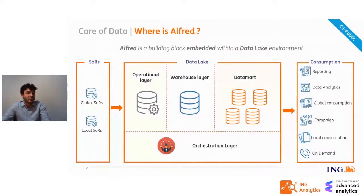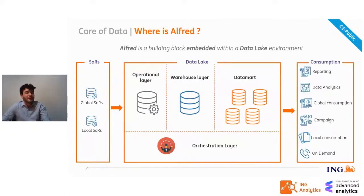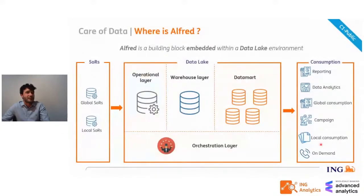Here we can see the architecture of the environment. On the left side there are the source systems, local and global. In the middle there is the entire Data Lake environment with its different layers, and Alfred's repository lives in this environment. On the right hand, we can see all the outputs generated from the data lake: data reports, analysis, local and global consumption, and everything else. In this way, Alfred manages all processes running on the data lake — the loading of data produced by source systems, the transformation of data in intermediate layers, the data mart fill-up, and also the production of outputs for other environments outside the data lake.